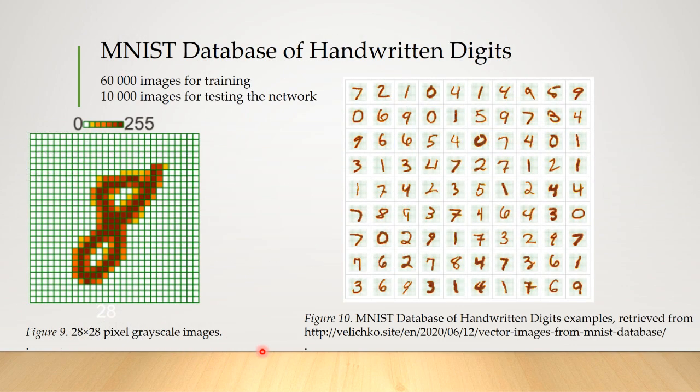To compare the memory used and the performance of neural networks, reference databases are used. For example, it can be the MNIST database of handwritten digits containing 60,000 images for training the network and 10,000 images for testing the network. The images are 28x28 pixel grayscale images. The task of the network is to classify all images into 10 classes, and the recognition accuracy is determined as a percentage.